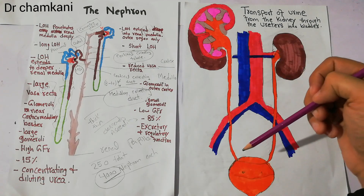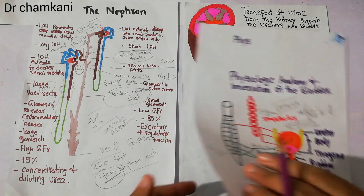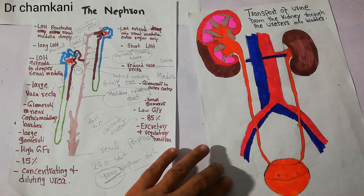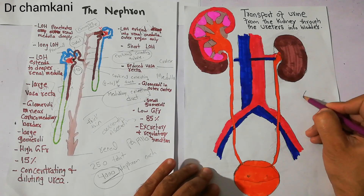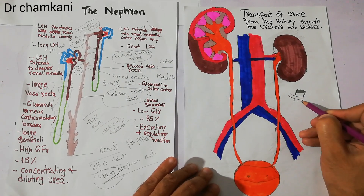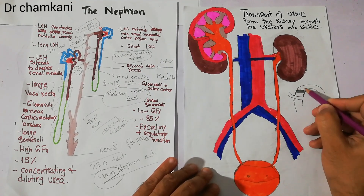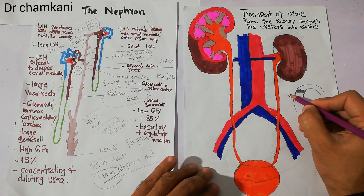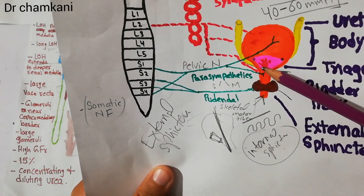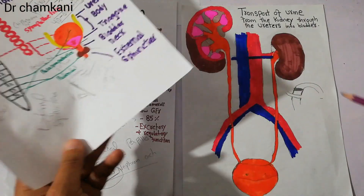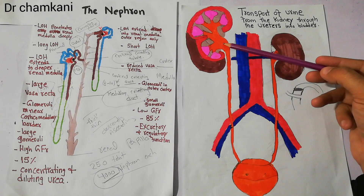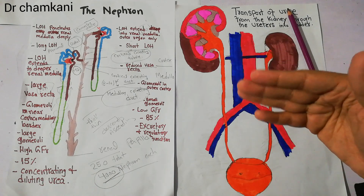Inside the bladder, the ureter is basically entering the bladder and has to move a few centimeters inside the wall of the bladder. This is the wall of the bladder, and the ureter moves a few centimeters inside the wall before it opens at the trigone level. The trigone is a triangular-shaped area on the posterior wall of the bladder, and these are the points at which the ureter opens. Now, how do the calices, the renal pelvis, and the ureter start peristaltic contraction and transport urine?